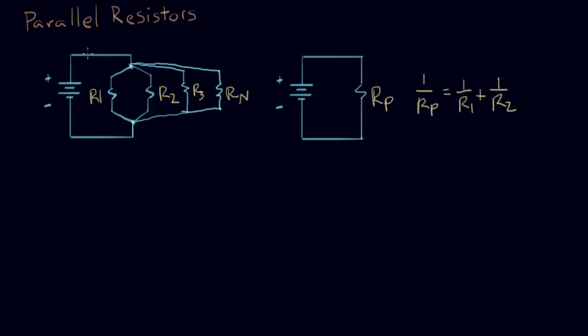So like we did before, we had a current here, and we know that current comes back here. The first current split, some current goes down through R1, some goes through R2, and if we have more resistors, some goes down through R3, and some goes down through Rn.